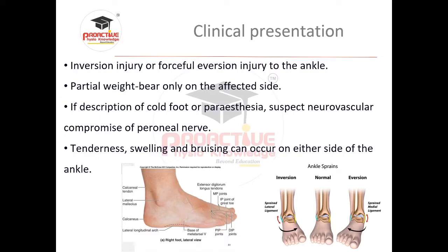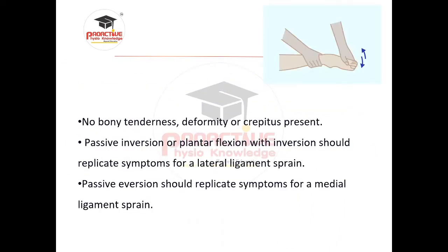An inversion injury or forceful eversion injury to the ankle joint causes the patient to feel partial weight bearing on the affected side. There may be paresthesia or cold feet, depending on the severity of the inversion injury. Tenderness, swelling, and bruising can occur on either side of the ankle — on the medial side if force is from the medial aspect, or on the lateral aspect if it is an inversion type of injury.